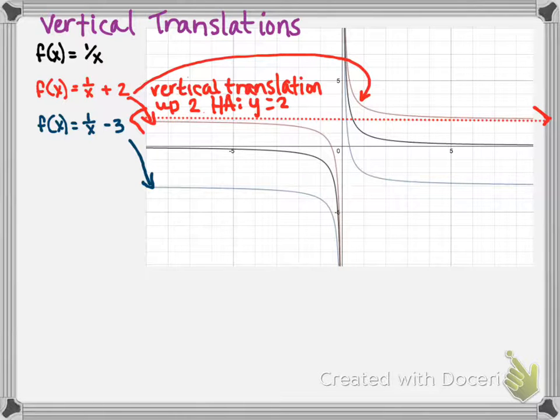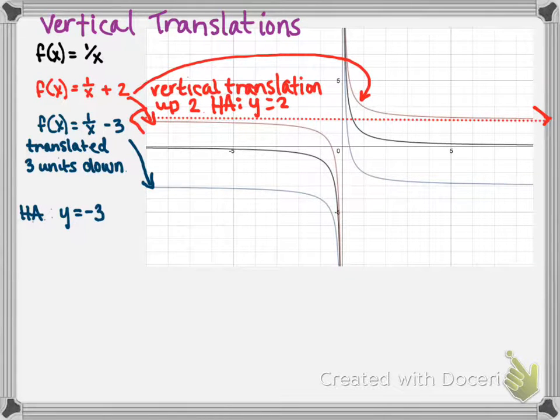Our blue function is 1 over x minus 3. This is a function that's translated 3 units down. Consequently, our horizontal asymptote is also translated 3 units down. So now it's not the x-axis, now it's y equals negative 3.